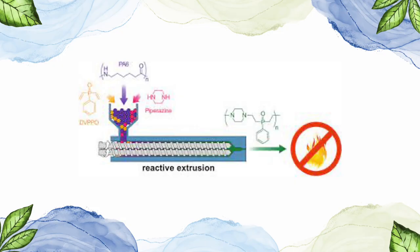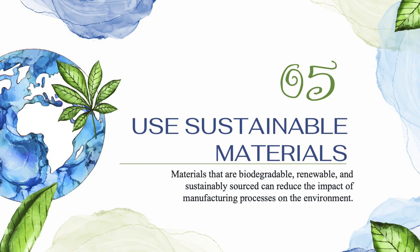On this slide, you get to see a diagram explaining not to use chemical substances in extrusion that can lead to any hazardous outcomes. Use sustainable materials. Materials that are biodegradable, renewable, and sustainably sourced can reduce the impact of the manufacturing process on the environment.